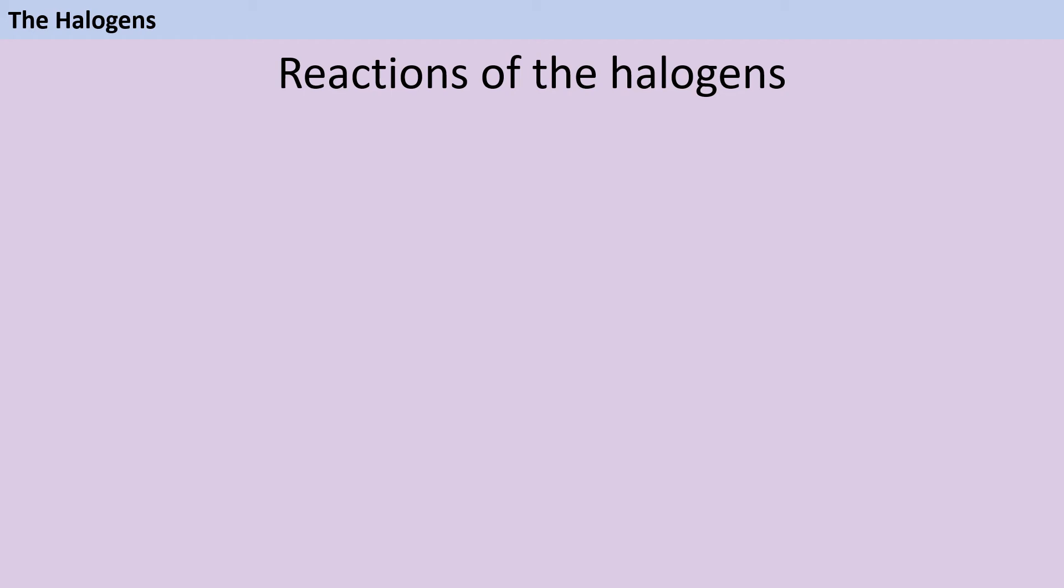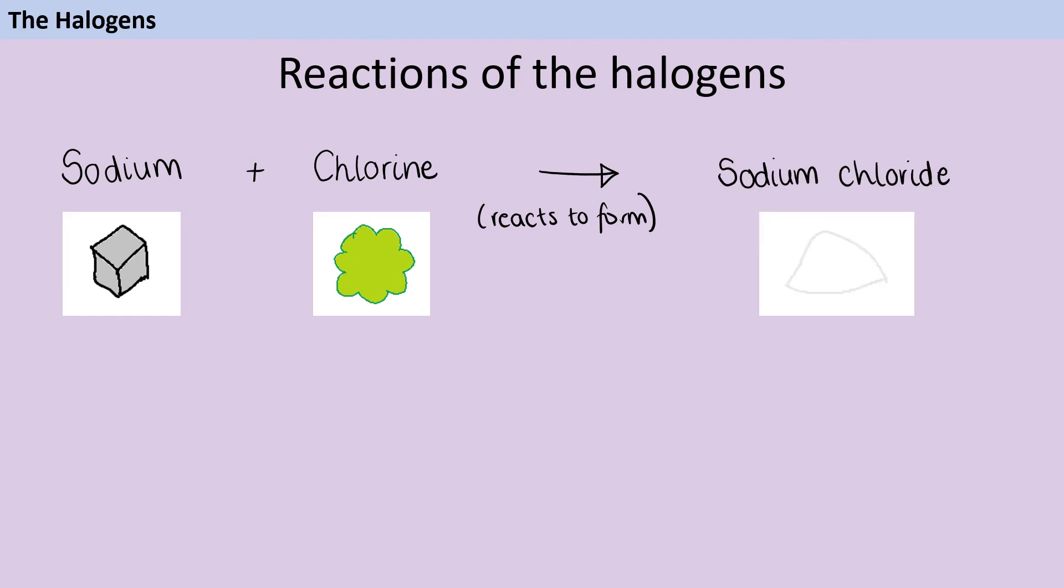The halogens react with metals in quite a spectacular way. We can see this if we observe the reaction of chlorine with sodium. Sodium is a soft silvery grey metal, and chlorine is a smelly poisonous green gas. When they react together, we use this symbol, the arrow, which means reacts to form. And they form sodium chloride, which you know as table salt, those white powdery crystals.